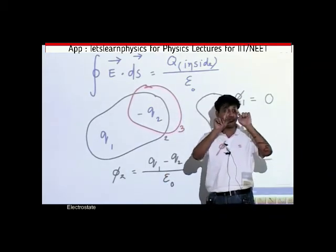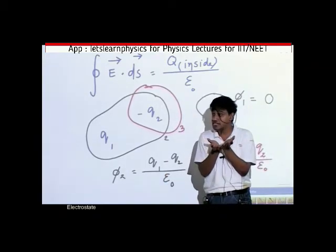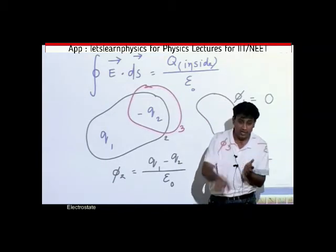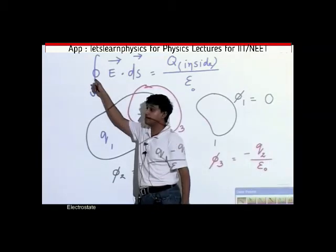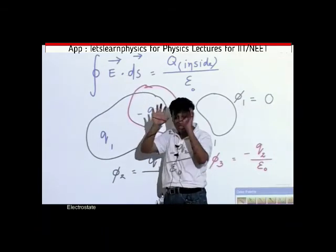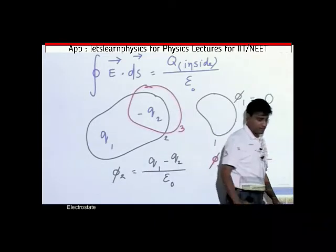So Gauss said that if you want to find flux from a closed surface, that value will depend only on the charge which is inside. This symbol in math indicates that the surface you are taking is closed.